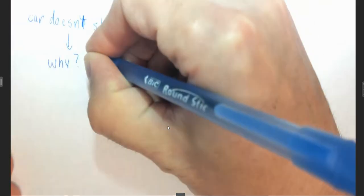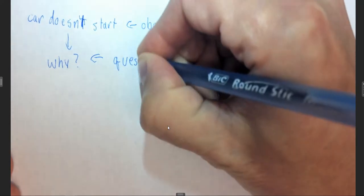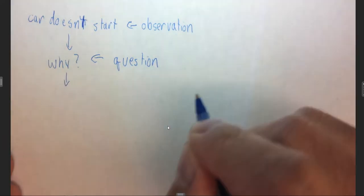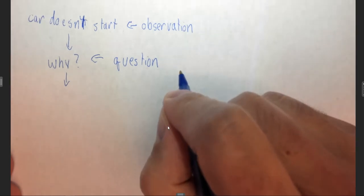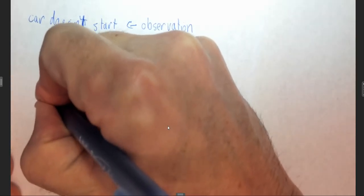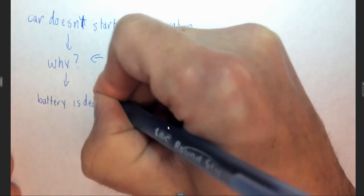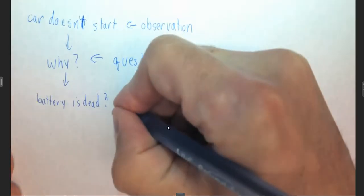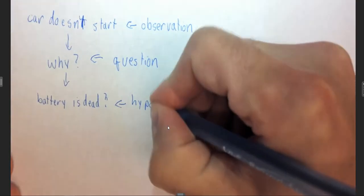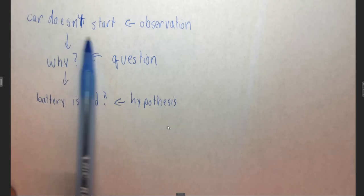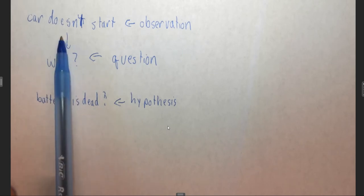Then we ask why. Why doesn't that car start? This is a question. So we ask a question based on our observation. Then we make an educated guess. Maybe battery is dead. We don't know that, but the battery is dead. This is called a hypothesis. A hypothesis is a logical guess for why our observation is the case. So why the car doesn't start.